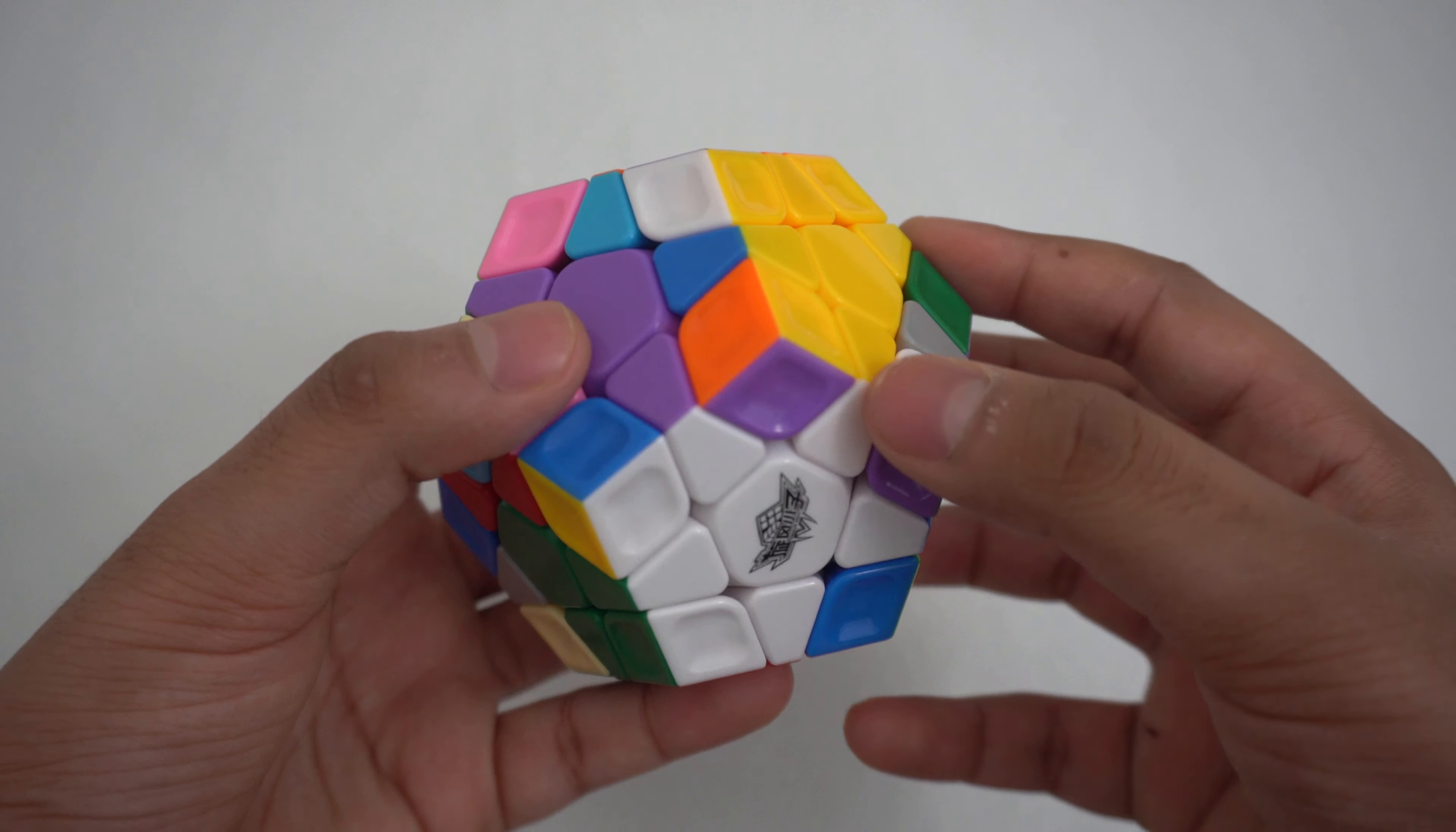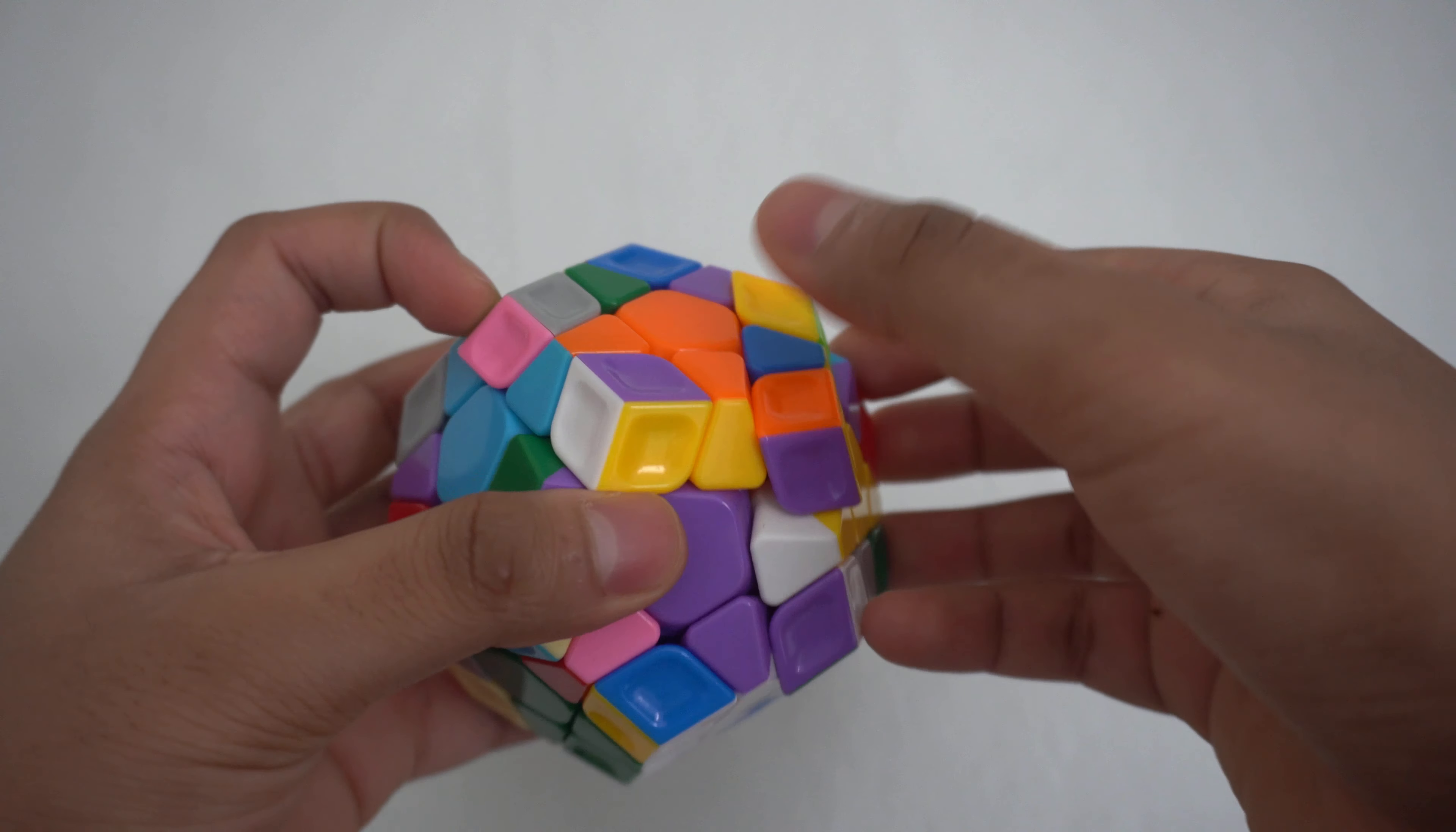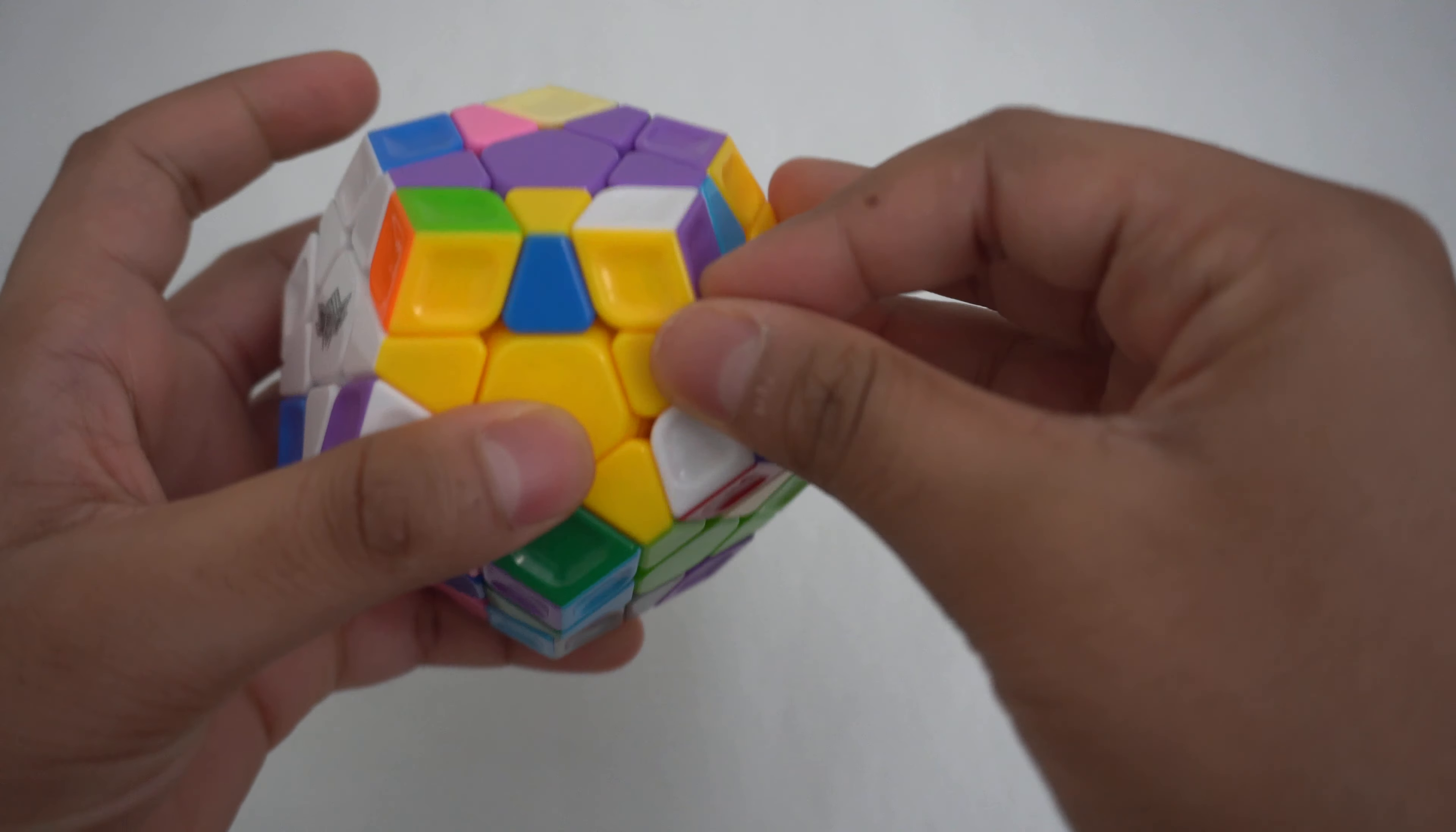For the Beginner's Method, find one of the corner pieces and put it above where it should go. Then insert the corner pieces and after that, find the edge piece. Once you find the edge piece, you can insert that in and you have made another pair.